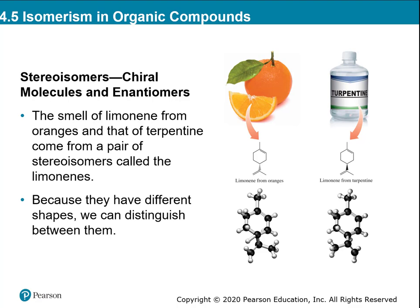The last kind are called enantiomers — the fourth kind of isomer. These are molecules that have the same formula and their bonds are put together exactly the same. They're a lot like a stereoisomer, but they're unique because certain carbon atoms in the molecule create non-superimposable mirror images.